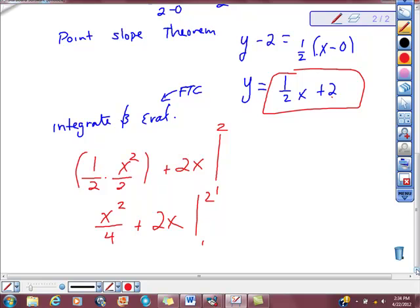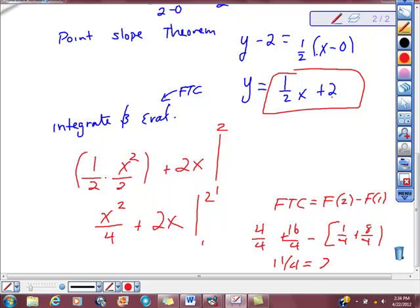First fundamental theorem of calculus says that we're going to do f of b, which is 2, minus f of a, which happens to be 1 in this case. When you do all of this, mine came out looking like this: 4 fourths plus 16 fourths minus 1 fourths plus 8 fourths for a total of 11 fourths, which is equal to 2.75, so h of 2.